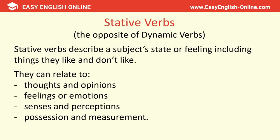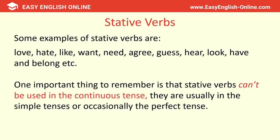Static verbs are the opposite of dynamic verbs. They describe a subject's state or feeling, including things they like and don't like. They can relate to thoughts and opinions, feelings or emotions, senses and perceptions, or possession and measurement. Some examples of static verbs are love, hate, like, want, need, agree, guess, hear, look, have, and belong, etc.